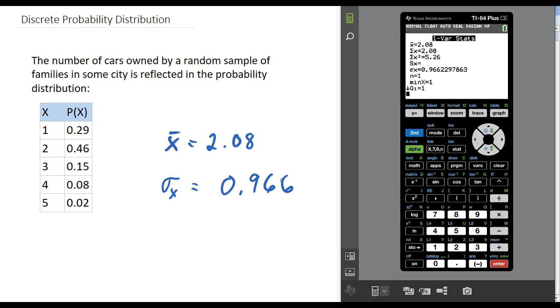That's how we find the mean and standard deviation of a discrete probability distribution.